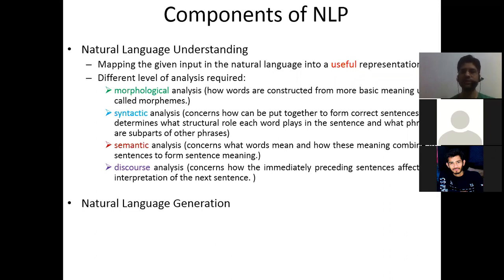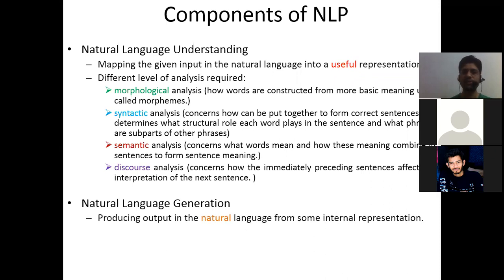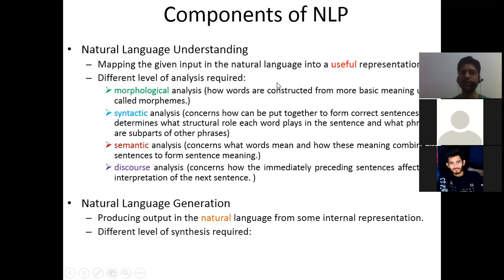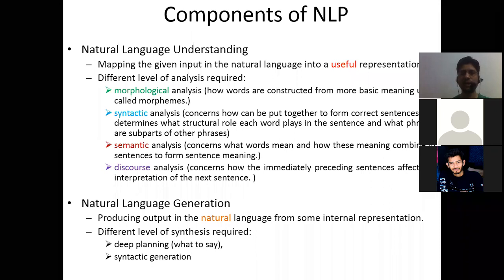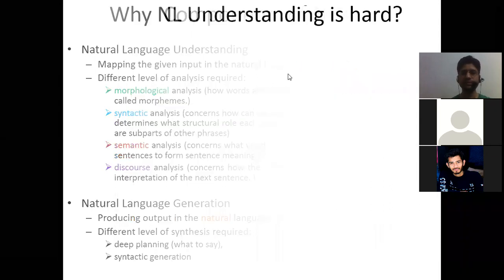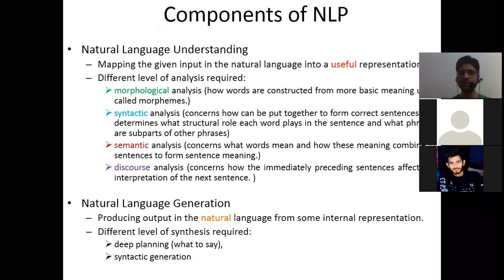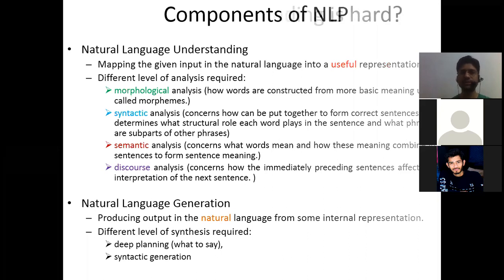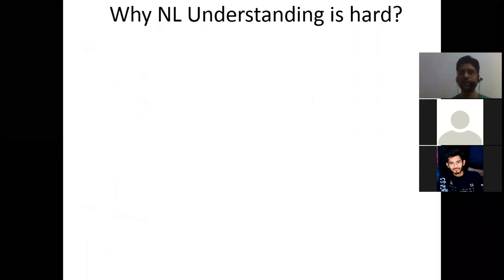Natural language generation involves producing output in natural language from some internal representation. Different levels of synthesis are required: first is deep planning — that is, deciding what to say — and second is syntactic generation. Natural language understanding is hard because natural language is extremely rich in form and structure and very ambiguous. One input can mean many different things, and ambiguity can occur at different levels.